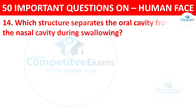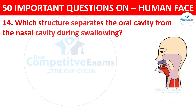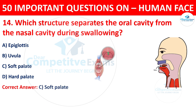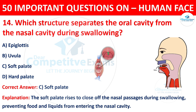Question number fourteen: which structure separates the oral cavity from the nasal cavity during swallowing, preventing food and liquids from entering the nasal cavity? The correct answer is C, soft palate. The soft palate rises to close off the nasal passages during swallowing, preventing food and liquids from entering the nasal cavity.